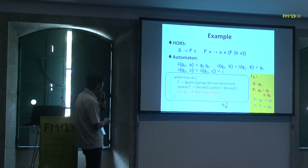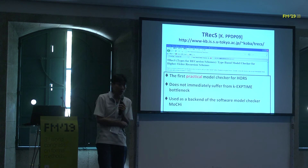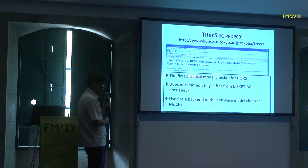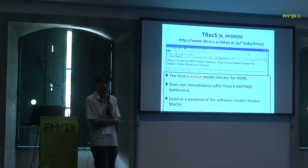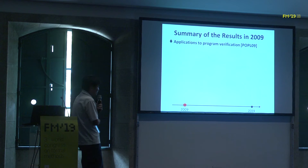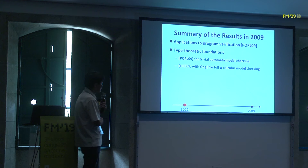Based on this idea, we implemented a HORS model checker called T-Rex, the first HORS model checker ever implemented. It does not immediately suffer from the k-EXPTIME bottleneck, and has been successfully used as a backend of the software model checker Mochi. To summarize our 2009 results: we applied HORS model checking to program verification, developed type-theoretic foundations, developed the first practical algorithm, and did some work on complexity.